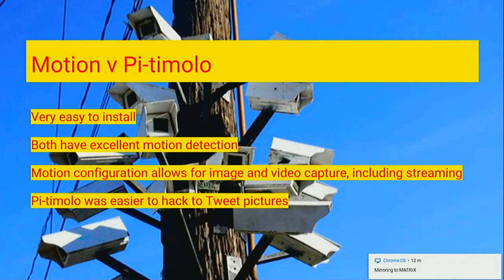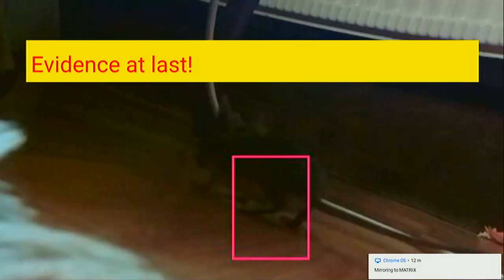Motion I found quite tricky — I think it's written in C. I couldn't figure out a way to change the functionality; they've got a good config file for things like file size, but that's about it. Pi Timolo was written in Python — you download the files and get access straight to the code to look through, figure out what's going on, and actually change it. And then there it was: the mouse — evidence at last! It was a fantastic moment to prove it was in fact a mouse.